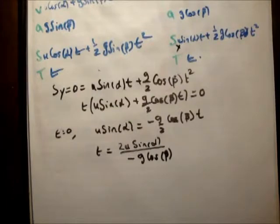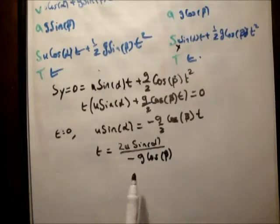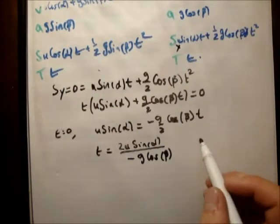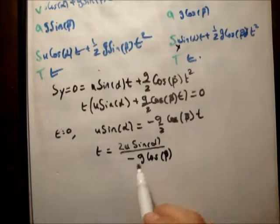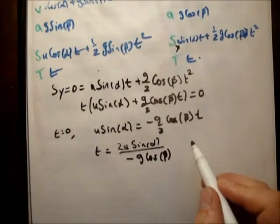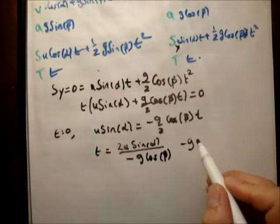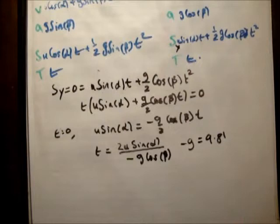And if we look at that, that's the correct answer: 2u sin alpha over g cos beta. The book states this as a positive quantity because they define minus g equal to 9.8, so in fact they have the same answer.